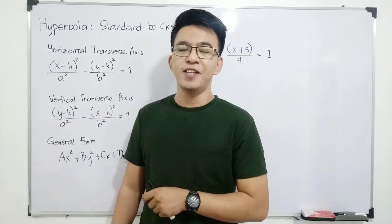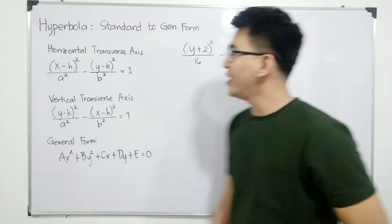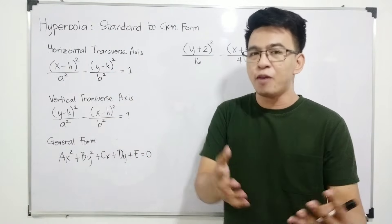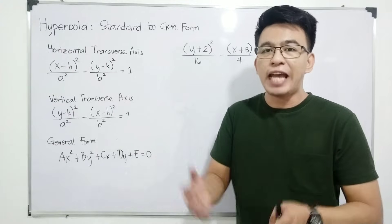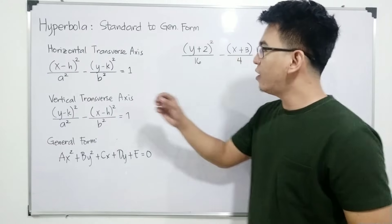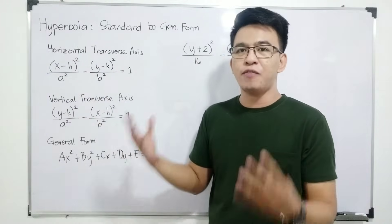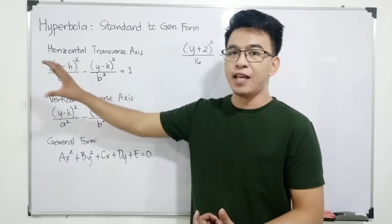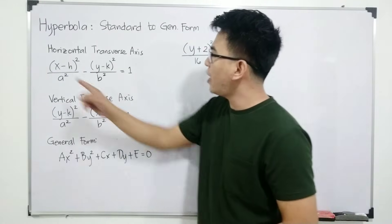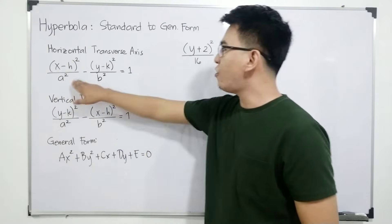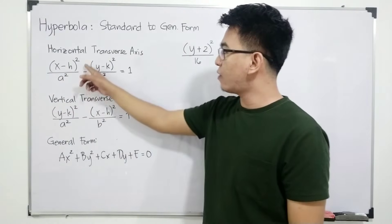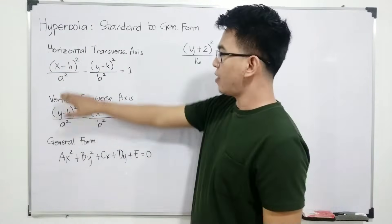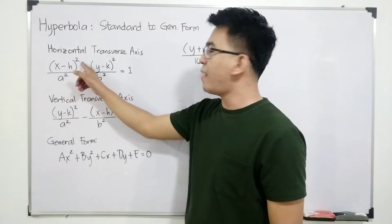So without further ado, let's do this topic. We have two equations which are the standard form for a hyperbola. If the center of the hyperbola is not located at the origin — meaning it is at (h, k) — the first equation applies when the orientation of your hyperbola is horizontal, meaning the opening goes to the left and right. The equation is: x minus h squared over a squared minus y minus k squared over b squared equals 1. If the x term has the squared and is positive, the orientation is horizontal.